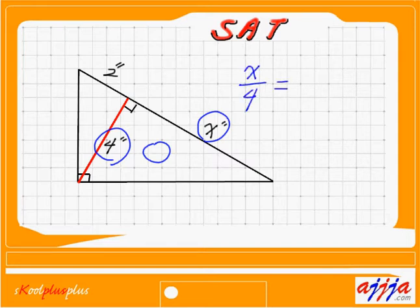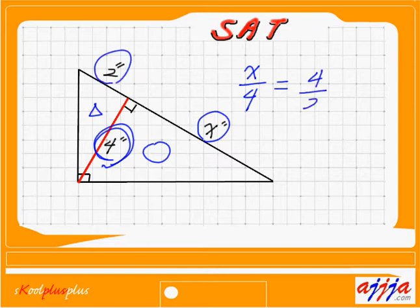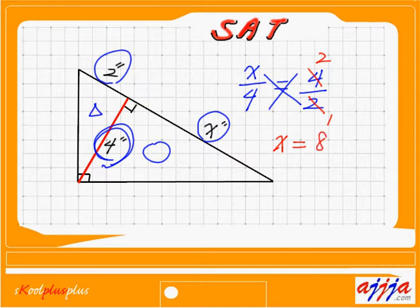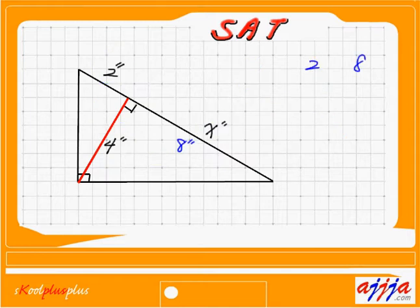X to 4 equals — now the small one. Which one is medium-sized? That's right, 4. What is the shortest one? That's it — 2. So 4 to 2. Now you can cross multiply. You can reduce: this one is 2, this one is 1. Cross multiplication: X times 1 is X. X equals 2 times 4, which is 8 inches. That's it.